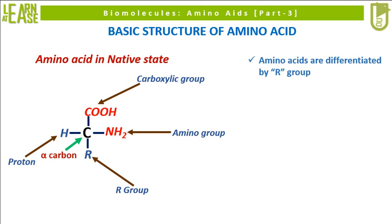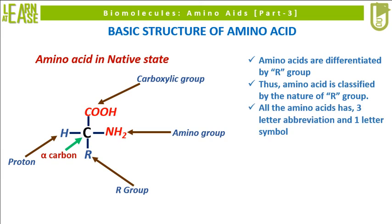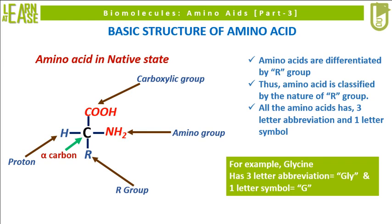Amino acids are differentiated by R group, and are classified by the nature of the R group. All amino acids have a 3-letter abbreviation and a 1-letter symbol. For example, the amino acid glycine has the 3-letter abbreviation GLY and the 1-letter symbol G.